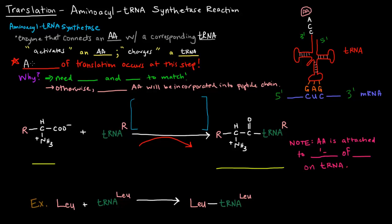So the accuracy of translation occurs at this step. Why? Well, we need the tRNA and the amino acid to match. Otherwise, the incorrect amino acid will be incorporated into the peptide chain and then we can get a faulty protein product.